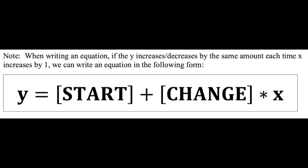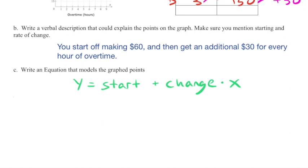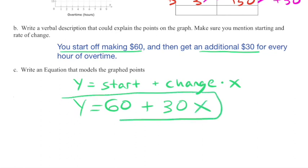Later in this course, we'll come to call this slope-intercept form, written Y equals MX plus B, which you might remember from middle school. But for now, we're going to keep it in this form of Y equals start plus change X. Using this form and the information from the previous problem that we started making $60 and then changed by getting an additional, a positive $30 for every hour, we can fill in the form of a line. Y equals the starting amount, 60, plus the changing amount, 30, X. And we will use this as our equation.